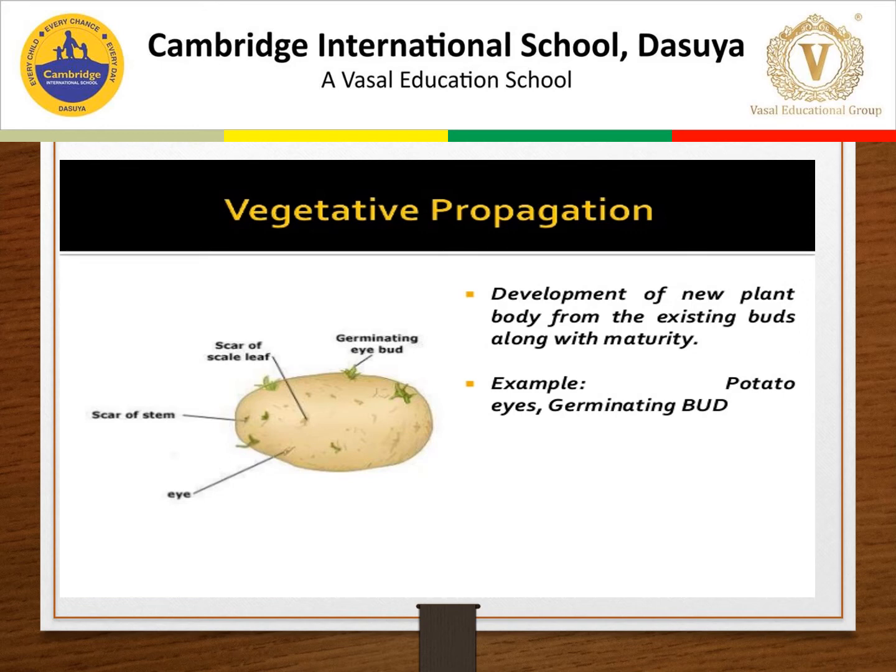In vegetative propagation by roots, roots of some plants like sweet potato and dahlias develop into buds. When such roots are planted in soil, new plants are produced. Roots of the guava plant also have buds that develop into new guava plants.